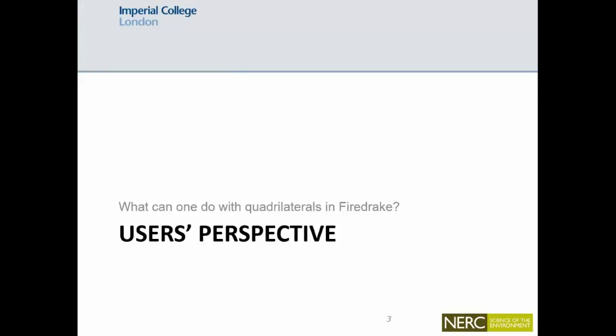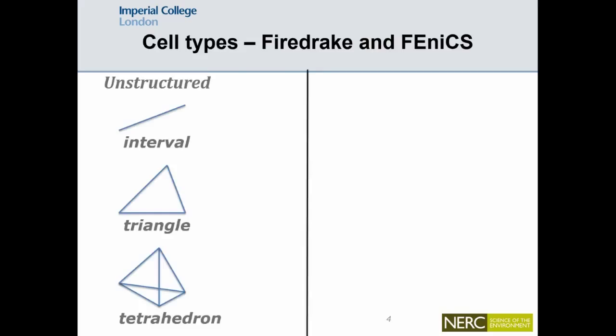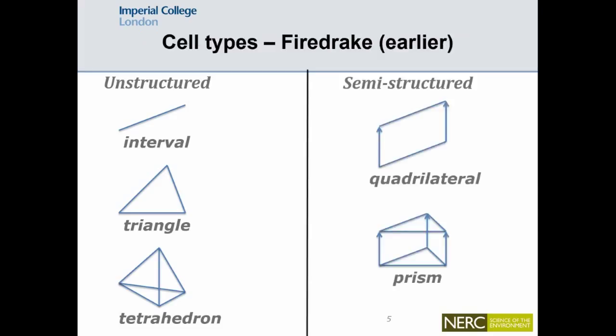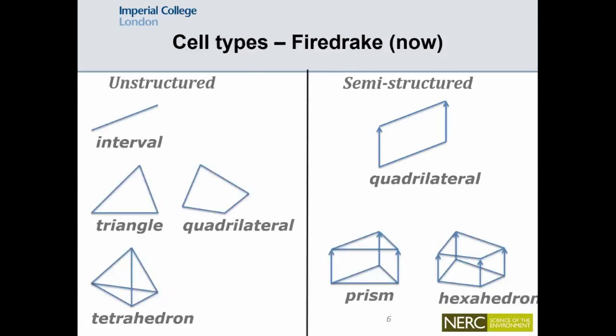So I'm going to start with the user's perspective and the features. First, an overview of the cell types. So both FireDrake and Phoenix support intervals, triangles, and tetrahedra. And since FireDrake has extruded meshes, with FireDrake I can also use semi-structured quadrilaterals and prism cells. And the work I'm going to present is that FireDrake also has fully unstructured quadrilaterals now. And composing this with the extrusion, one can also use semi-structured hexahedral meshes to solve PDEs.